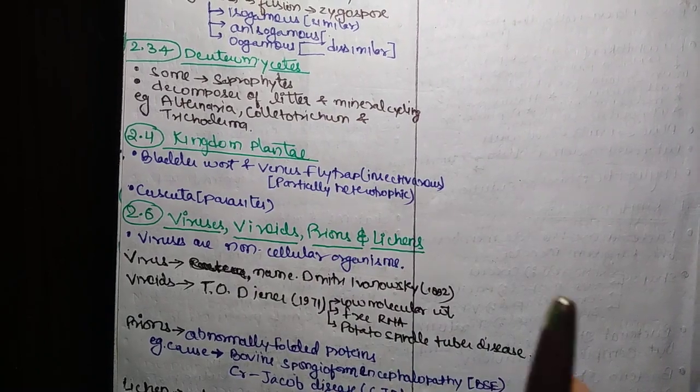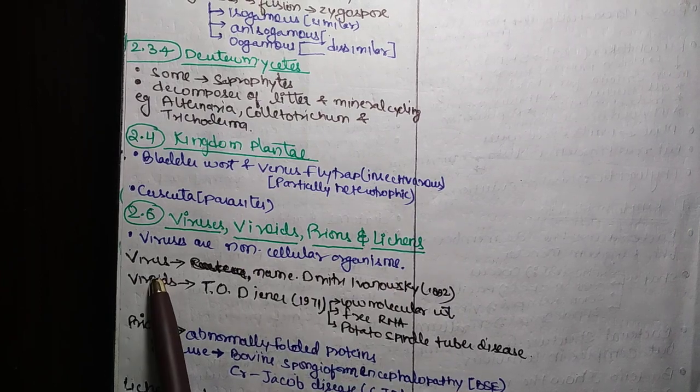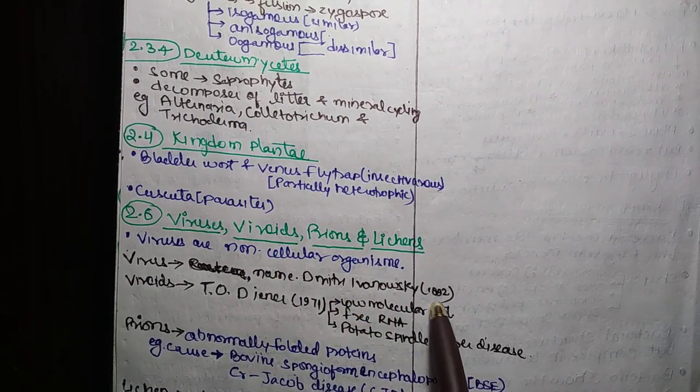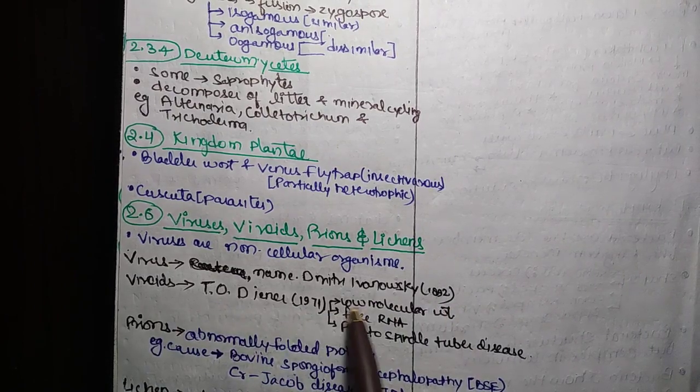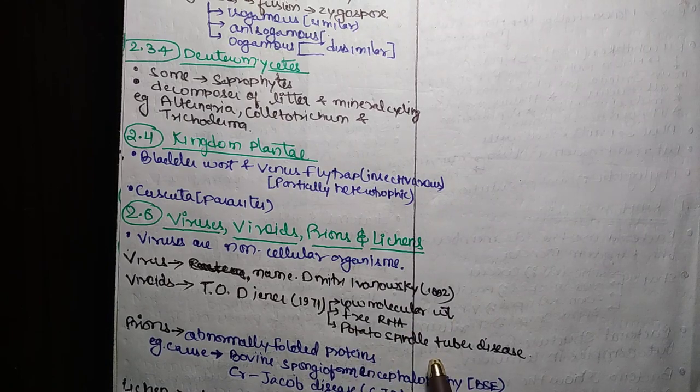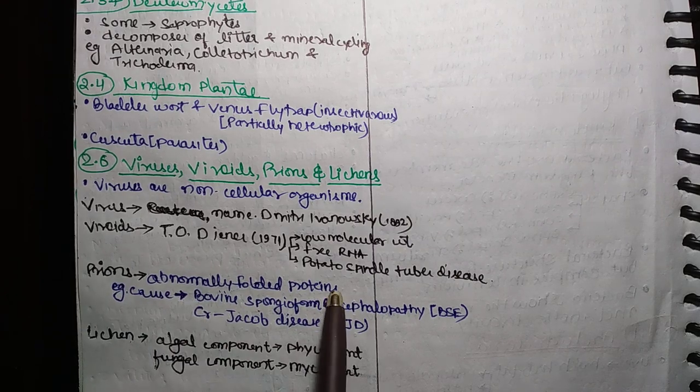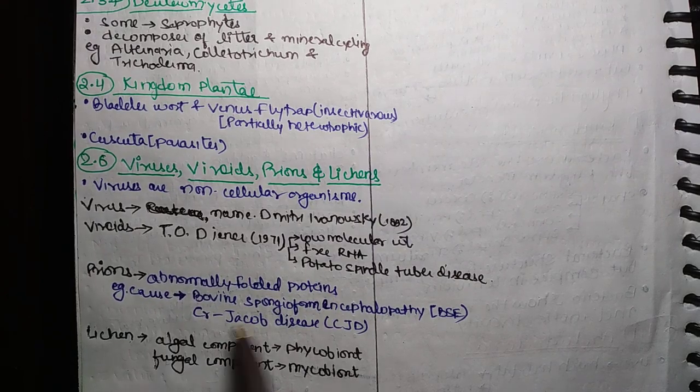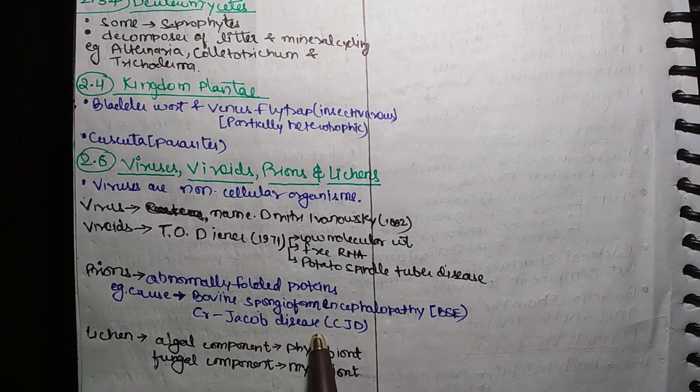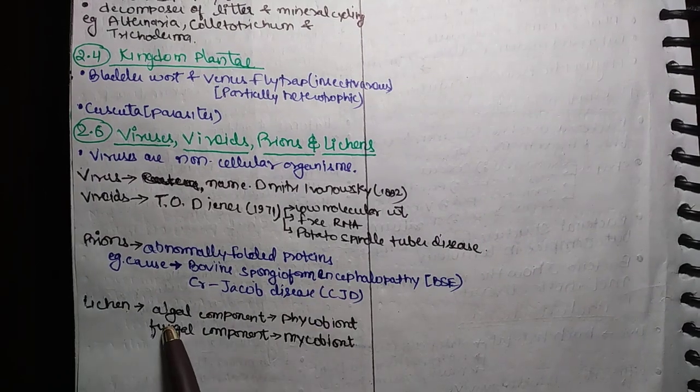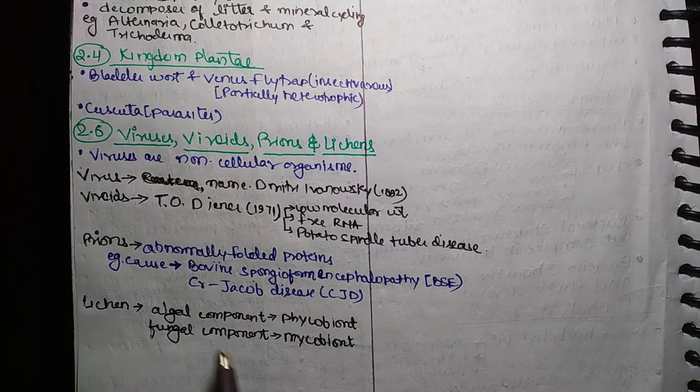Next topic is virus, viroids, prions and lichens. Viruses are non-cellular organisms. Virus's name is Dmitri Ivanovsky, 1892. Viroids' name is T.O. Diener, 1971. Low molecular weight. Free RNA. Prions. Abnormally folded proteins. This causes BSE bovine spongiform encephalopathy. And we can call it Creutzfeldt-Jakob disease, CJD. Lichens. Phycobiont and fungal component, Mycobiont.